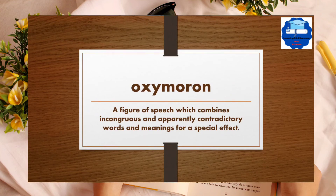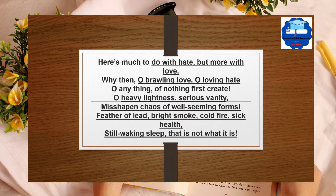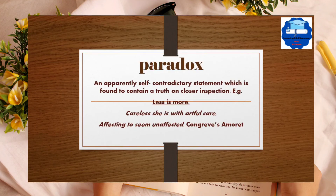Oxymoron is a figure of speech which combines incongruous and apparently contradictory words and meanings for a special effect. It is a common device, closely related to antithesis and paradox, especially in poetry. In Romeo and Juliet, Shakespeare has used this technique very impressively: 'loving hate,' 'brawling love,' 'heavy lightness,' 'serious vanity,' 'bright smoke,' 'cold fire,' 'sick health,' 'still waking sleep.' These are all examples of oxymoron.